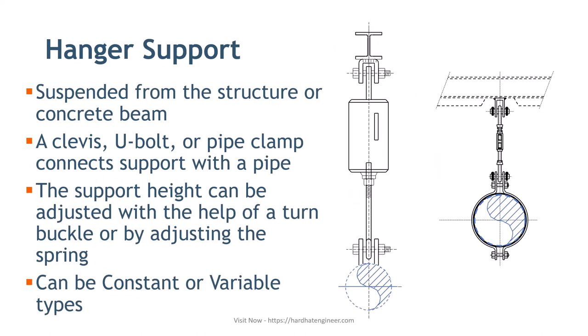Now let's see what pipe hanger support is. It is a type of spring support that is suspended from the structure or concrete beam. It can be rigid, variable, or constant spring support. Rigid means a fixed metal rod. A U-bolt or pipe clamp connects the support with the pipe, and the support height can be adjusted with the help of a turnbuckle or by adjusting the spring.